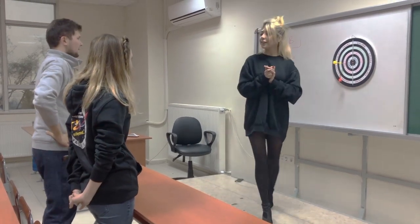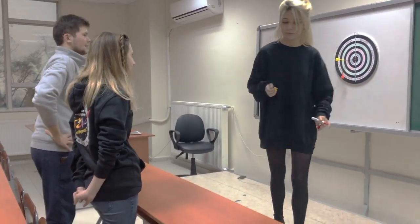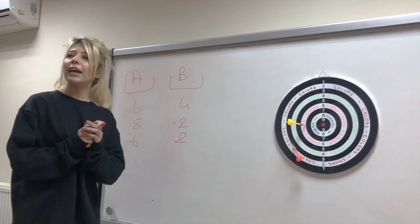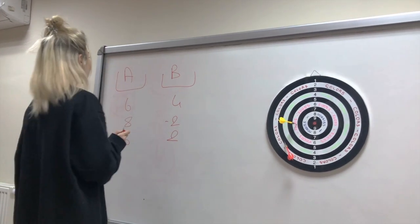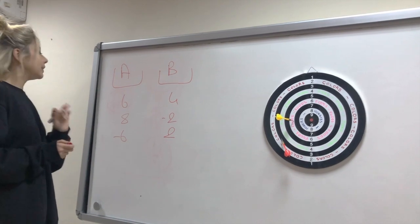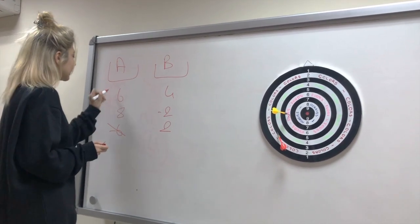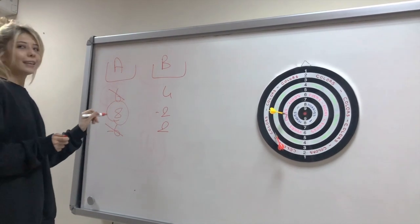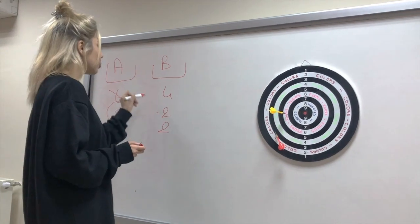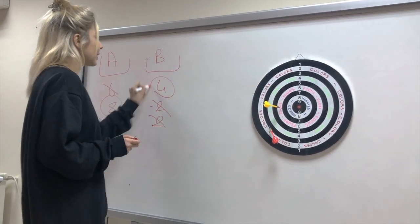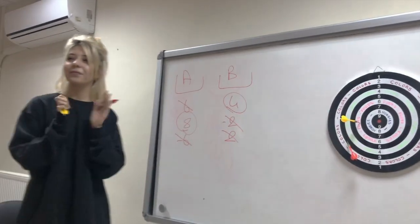Okay, our activity is finished. Let's find the winner. Group A, Timur gets six and eight points. Group B, Özge gets four points. So Timur is the winner. Yeah!